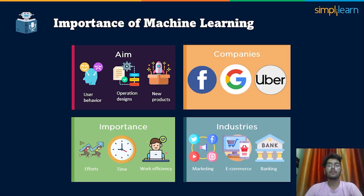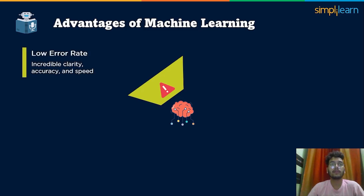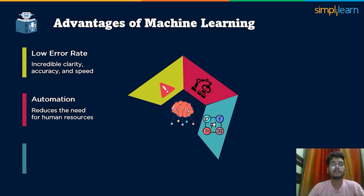Before diving deep into any technology, it is very important to understand its advantages and disadvantages. Here are some advantages of machine learning. The first one is low error rate — if coded properly, machine learning models would have a low error rate as compared to humans, with incredible clarity, accuracy, and speed. The second one is automation: machine learning reduces the need for human resources at every step as it automatically learns and predicts the output. The third one is wide range of application — almost every sector takes advantage of machine learning to reduce human effort and get quick results.